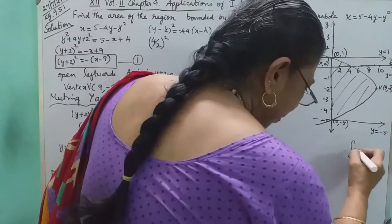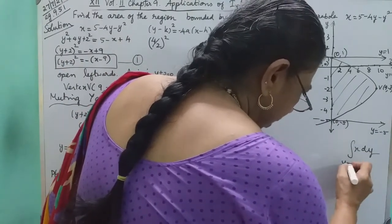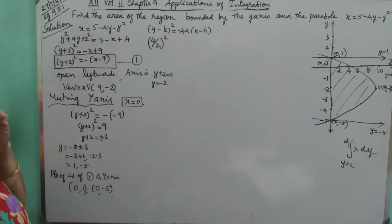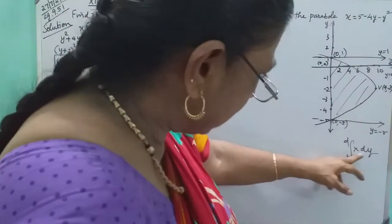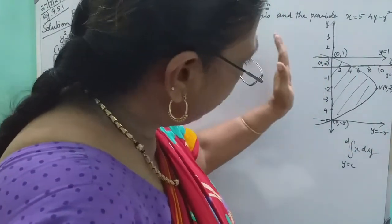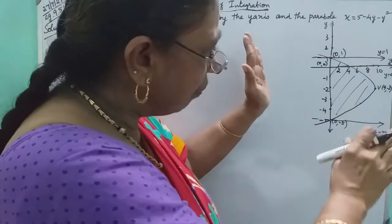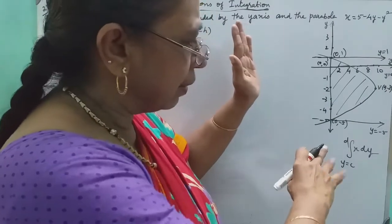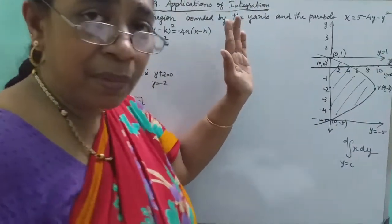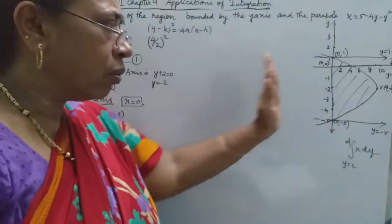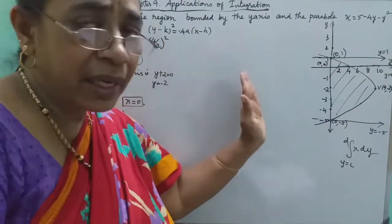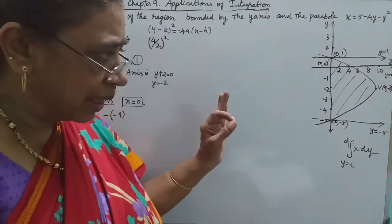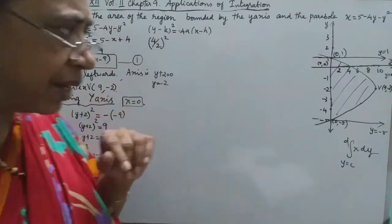The formula is integral of x dy. The y-axis limits go from c to d. Since this area is entirely to the right of the y-axis, x is completely positive. However, the area to the left side uses the modulus formula, so modulus gives a minus sign. The required area is on the left side.